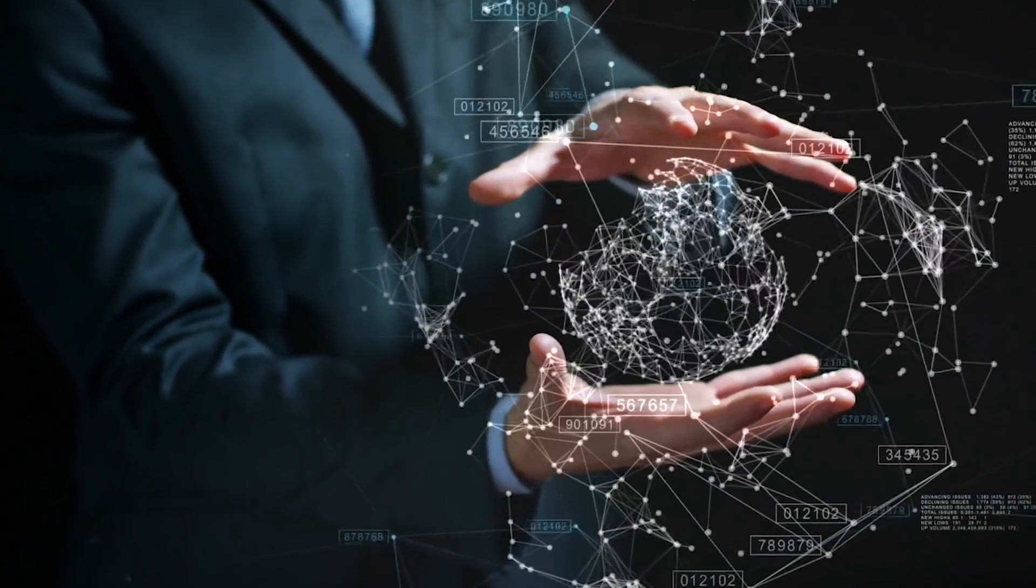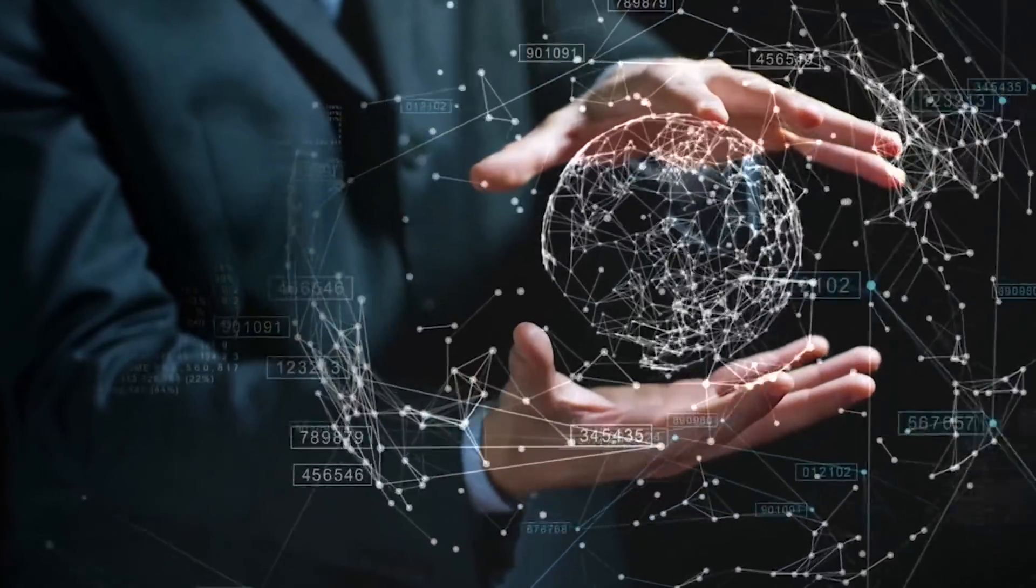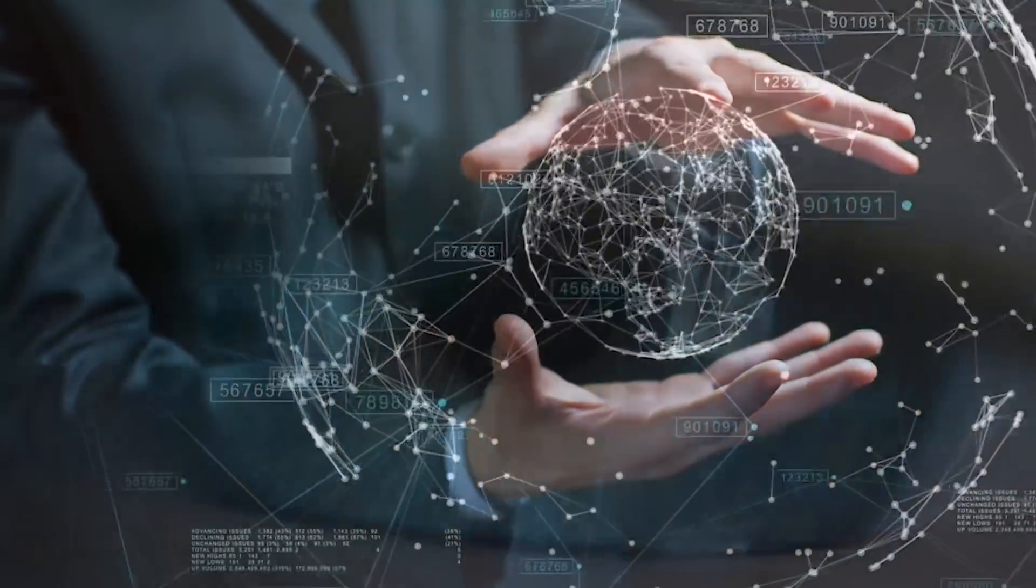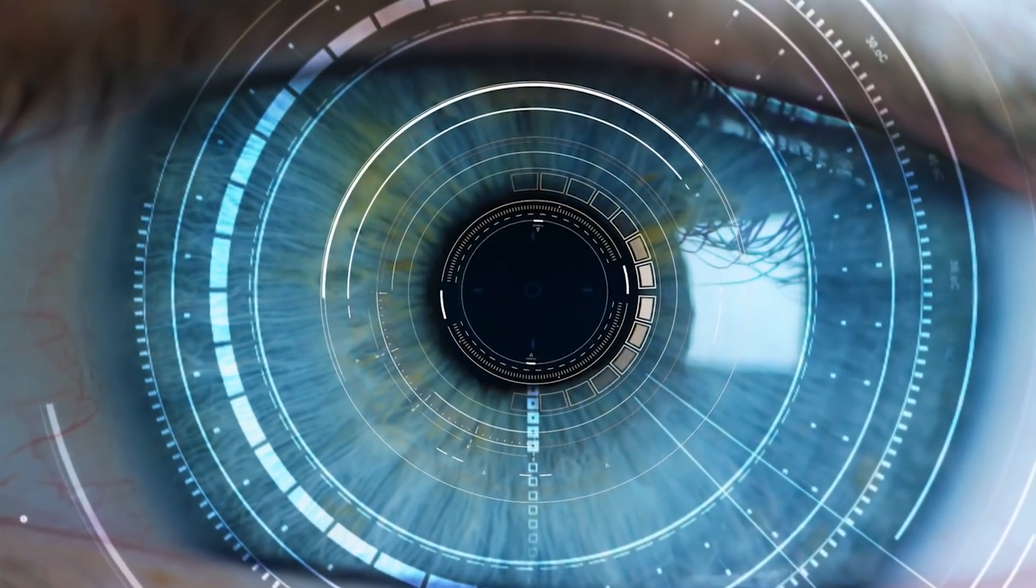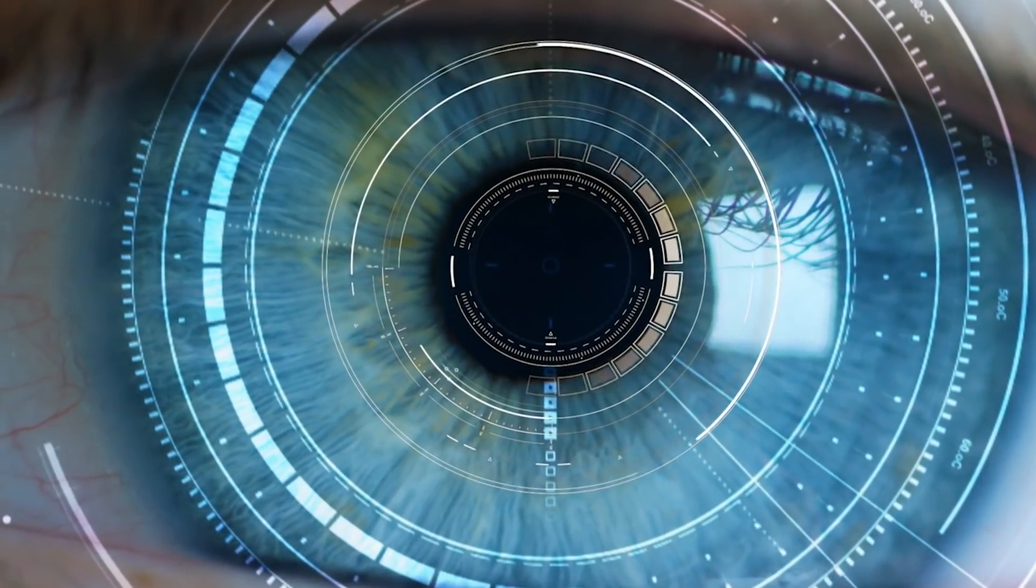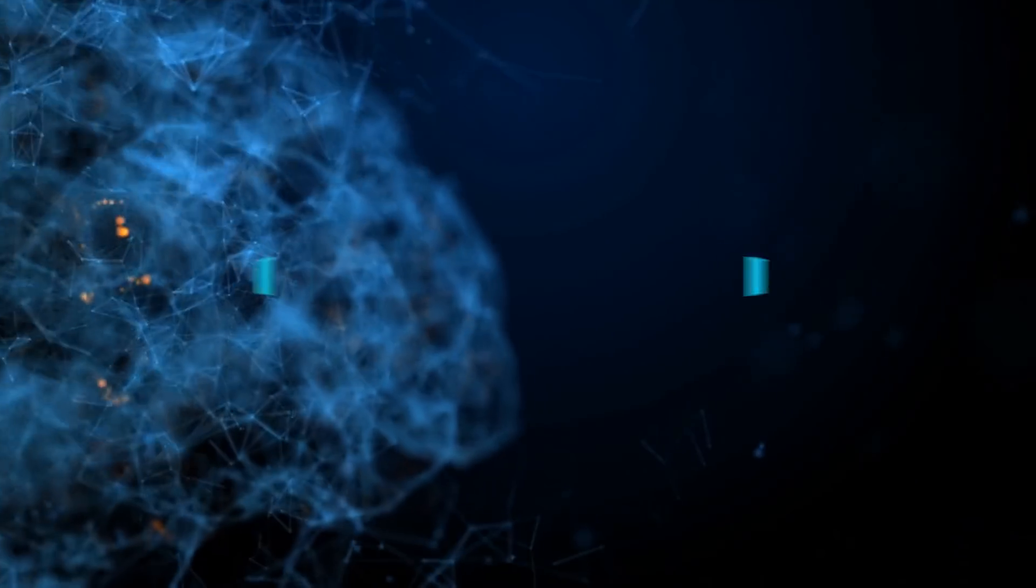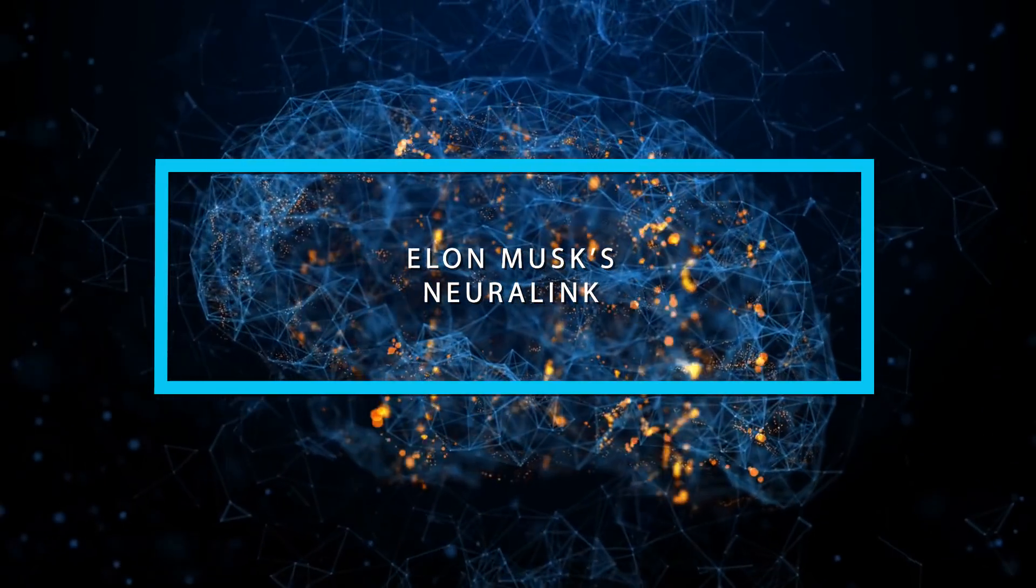The main objective of Neuralink is to create the future of brain interfaces, building devices that will help people with paralysis and inventing new technologies to expand people's cognitive abilities, which will enhance their community and quality of life. Curious to know more about how Neuralink works and what it can do? Keep watching!